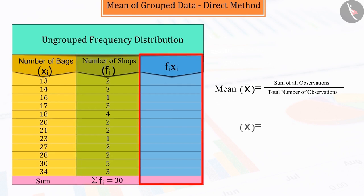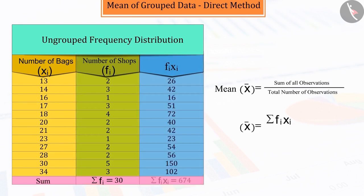Divide the sum of their product, fi xi, that is 674, by the sum of their frequency, fi, that is 30. On solving this, the mean is obtained as 22.46 approximately, where the sign sigma means summation.